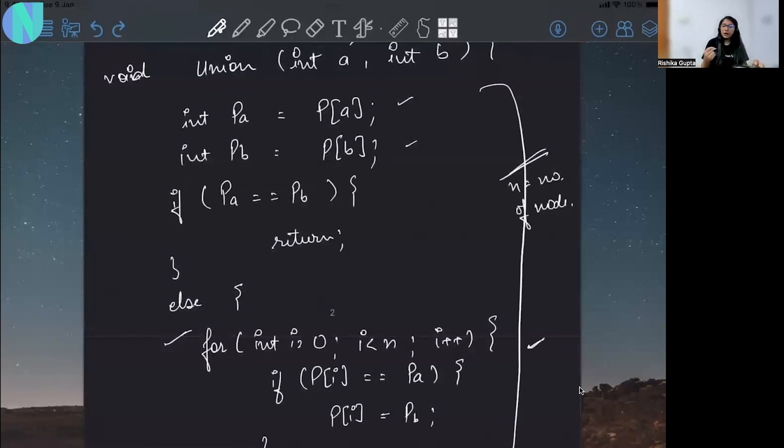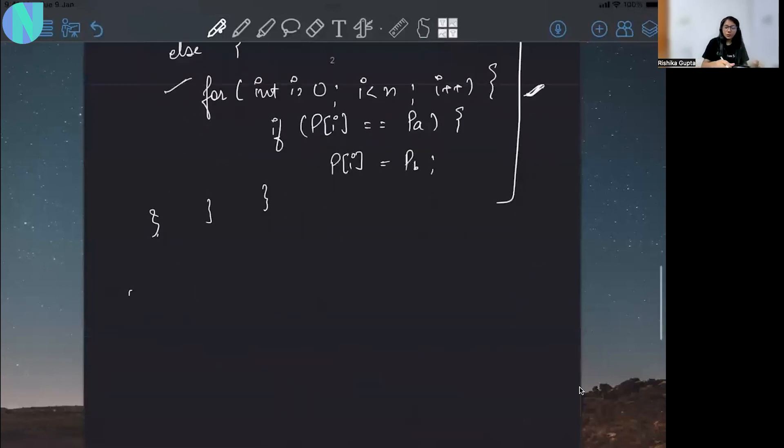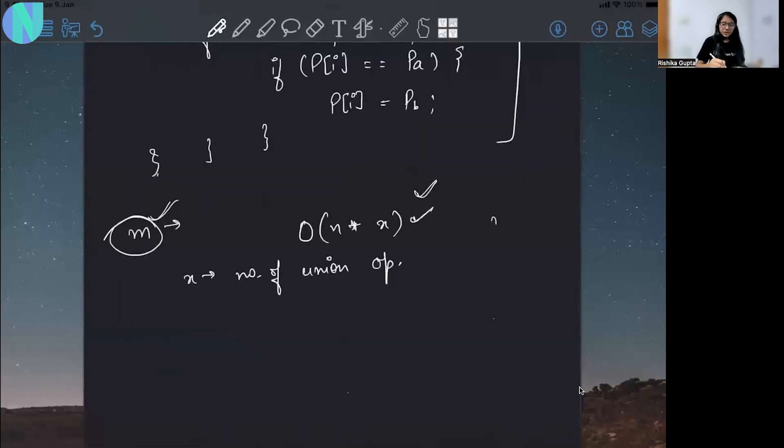Now as you can see here we are running a linear loop. That is why the complexity of union operation would be O(n). And if you have given m operations in which some may be of find type and some may be of union type, then the average time complexity would be O(n times x) where x are the number of union commands or union operations. So this is not a very good time complexity, because if all of your commands are union operations then it can turn around to be n squared type, quadratic in nature, which is not a good complexity.